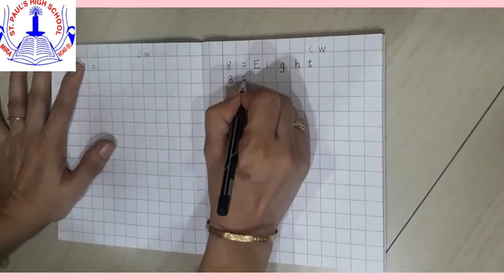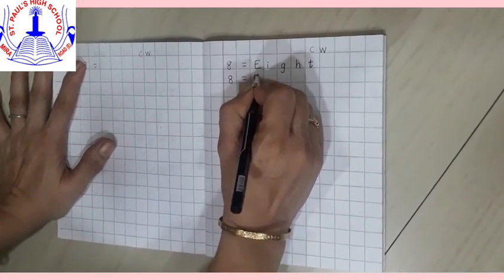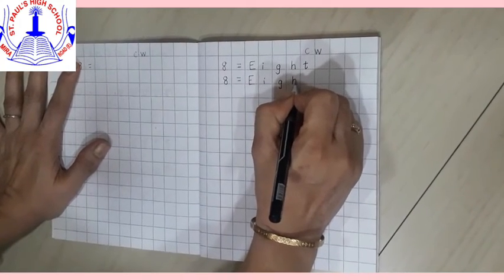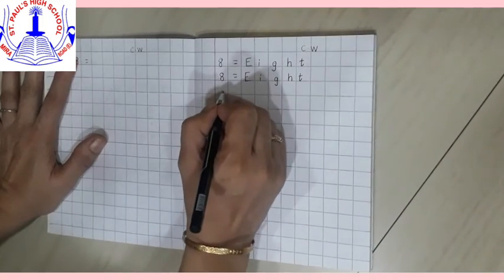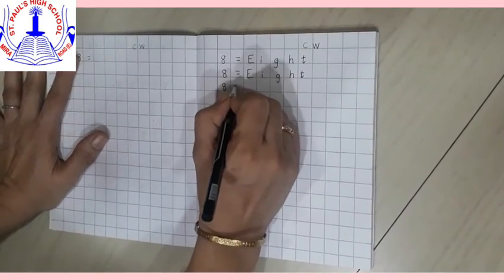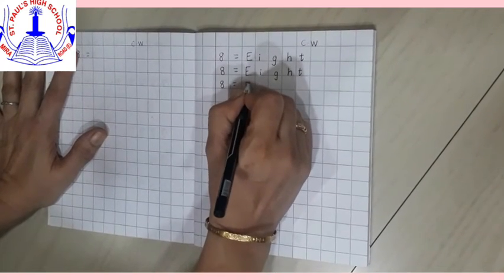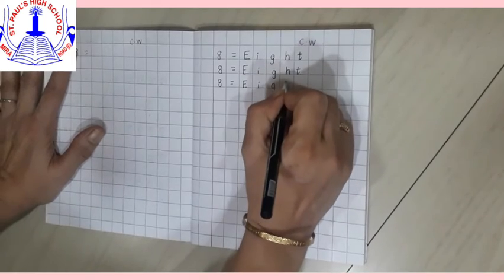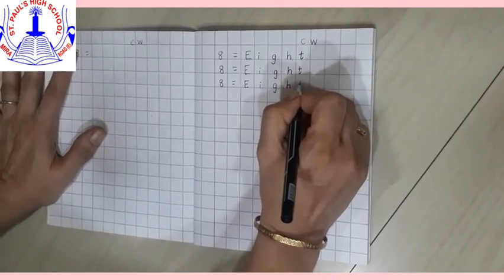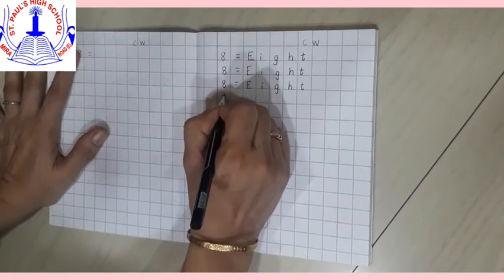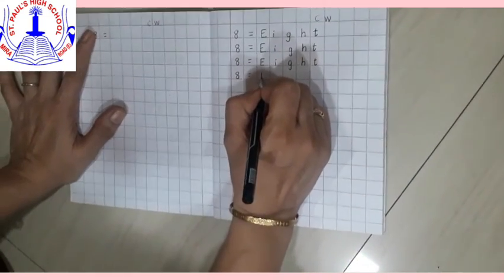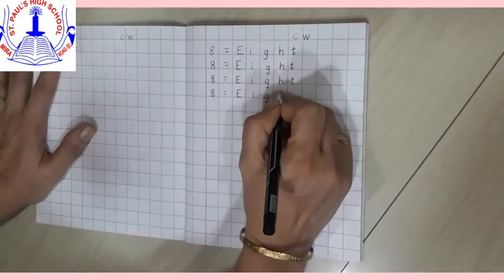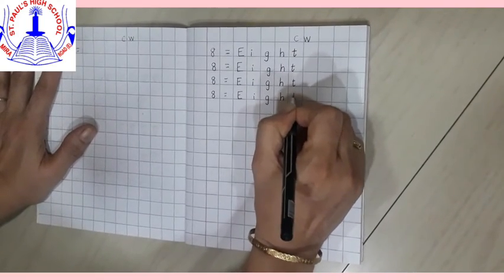Again write 8. Put equal sign E-I-G-H-T. 8. Again write here 8. 8 put equal sign E-I-G-H-T. 8.